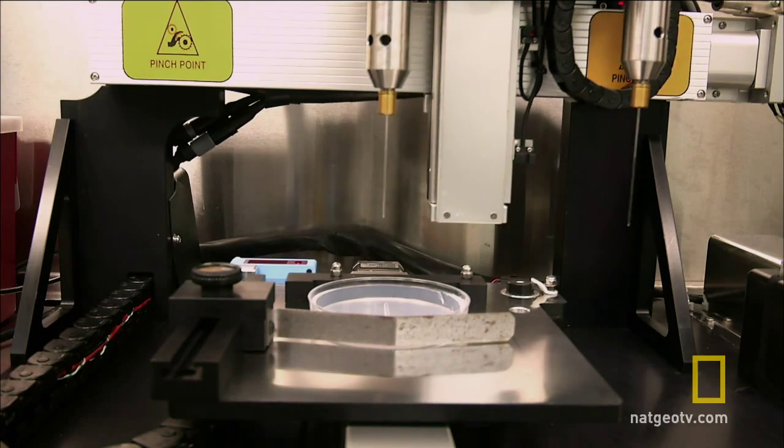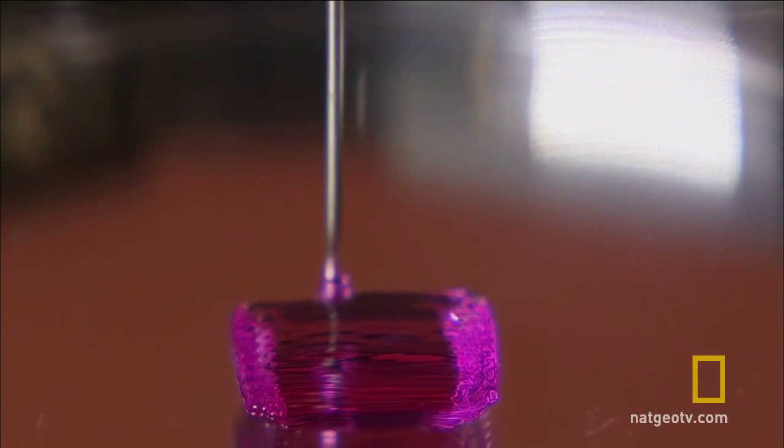The principle of the bio printer is similar to how an inkjet printer produces words. Following the computer design, the 3D printer creates sheets of cell-friendly biopaper made from collagen or gelatin to temporarily hold the cells in place.